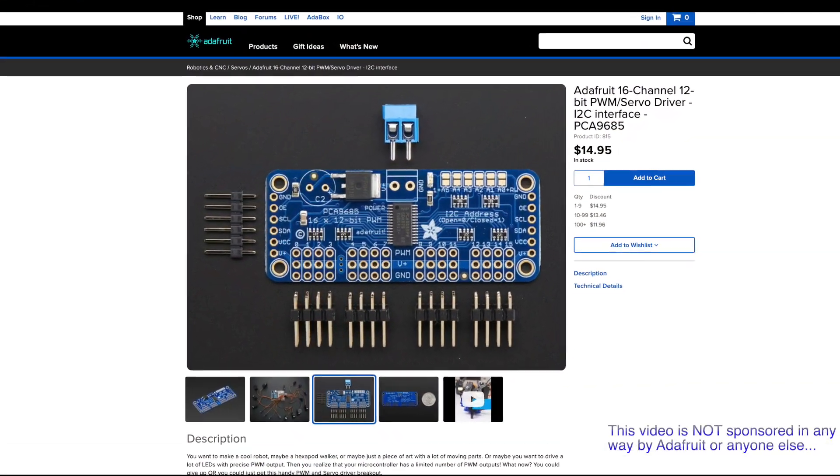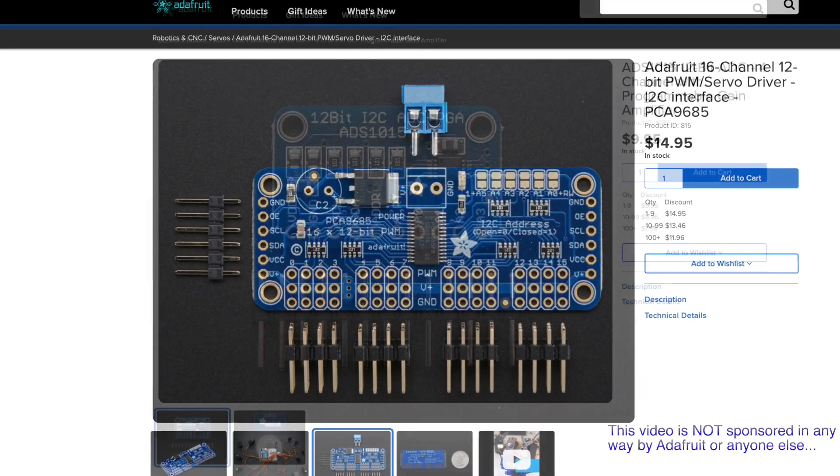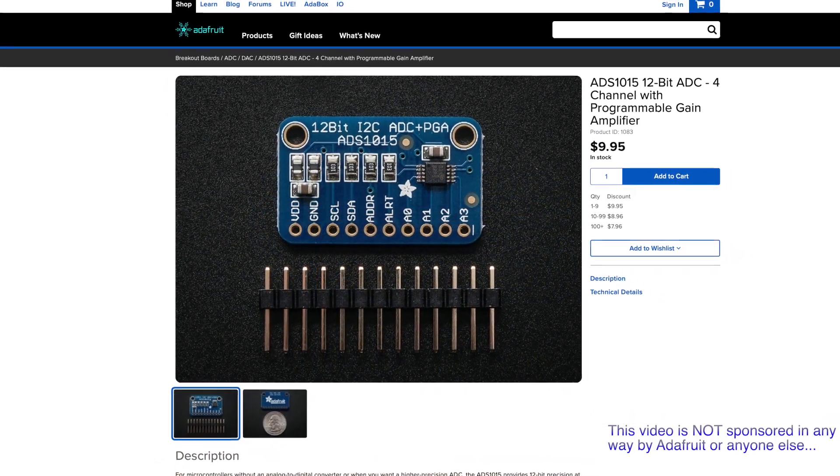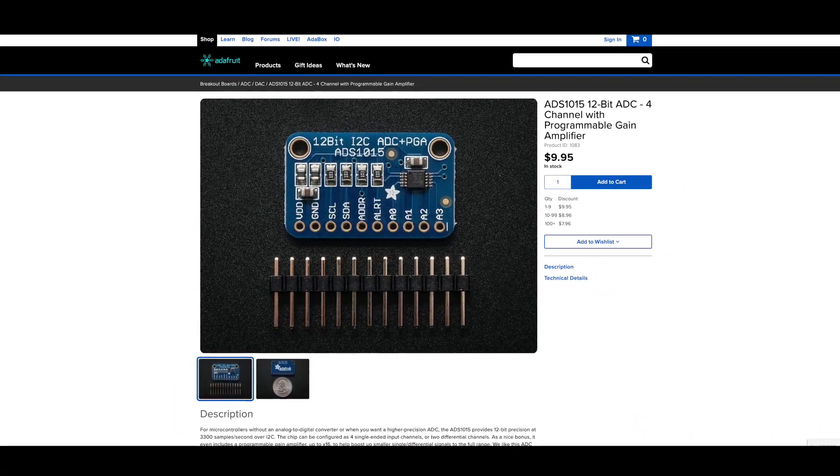Both the PWM and the analogue to digital converter bobs are available from Adafruit, who also provide associated Arduino libraries for them. The links are available in the description.